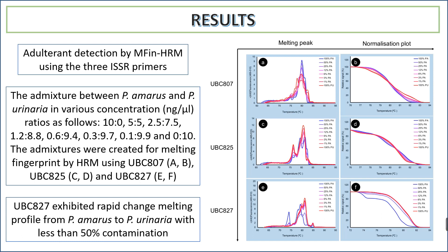Detection of high resolution melting using the three ISSR primers showed melting peaks and normalization plots. A higher number of DNA and higher GC-rich content is represented for P. amarus at 100%. The graph shifts toward the lower end as concentration decreases through 50%, 25%, 12%, 8%, 3%, and 1%, while higher GC content shifts the graph to the right side.